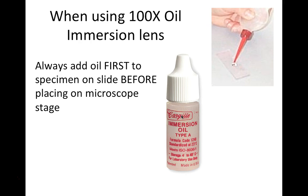If we're using the 100x objective, this is called an oil immersion lens because it is designed to only be used with immersion oil. The immersion oil goes on the microscope slide over the specimen, and the objective lens sits right in the oil, so the lens, oil, and specimen must be continuously aligned. The oil helps collect all of the light so we can see our specimen. We only use the 100x oil immersion lens on specific types of specimens and only when instructed.